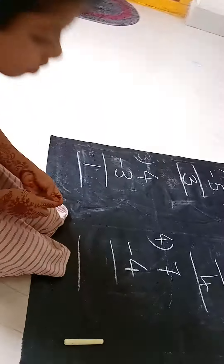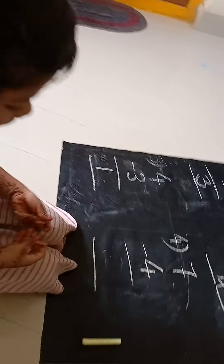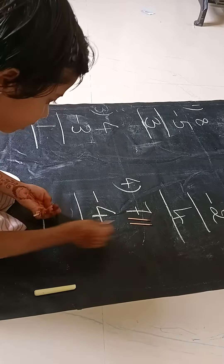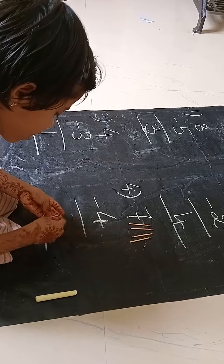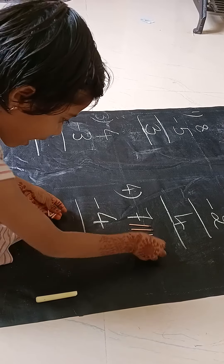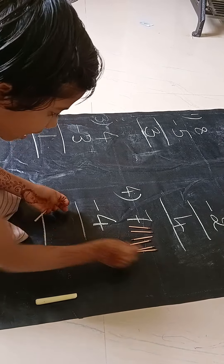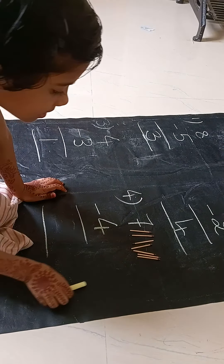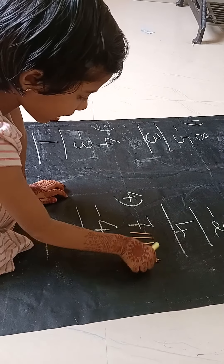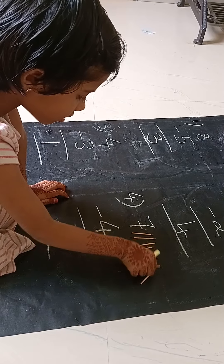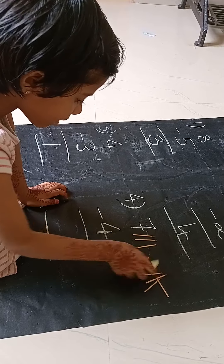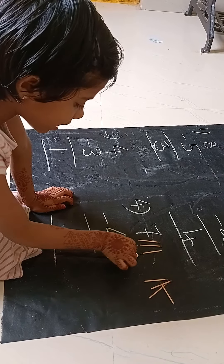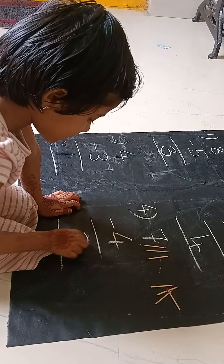We have 7 maths sticks: 1, 2, 3, 4, 5, 6, 7. If I take 4 maths sticks — 1, 2, 3, 4. How many left? 1, 2, 3. Answer is 3.